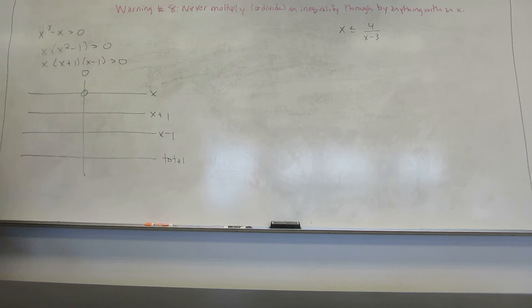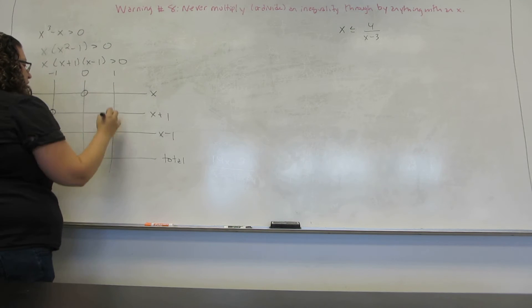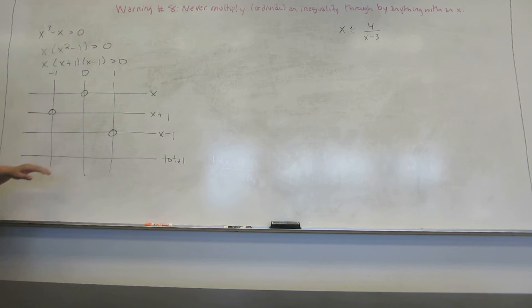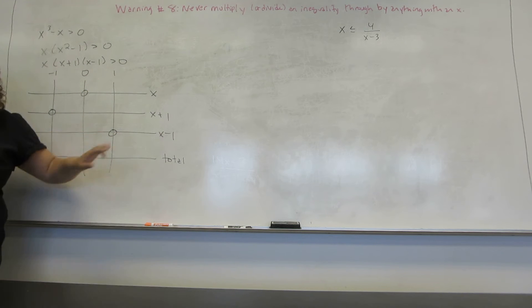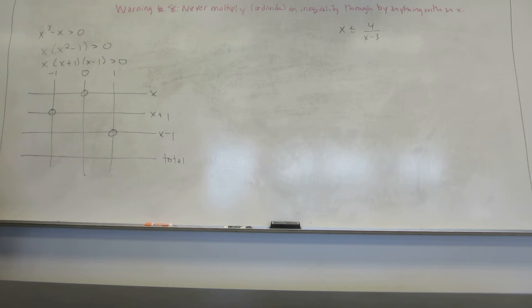Now X plus one is zero at negative one. So I'm going to have a vertical line for negative one and put a zero on this line, indicating that that's where that factor is zero. X minus one is zero at positive one. So I label it one and put a zero on the line where that factor is zero. If you happen to have these in the wrong numerical order, there's no way to fix it without starting from scratch. So be very careful about that.